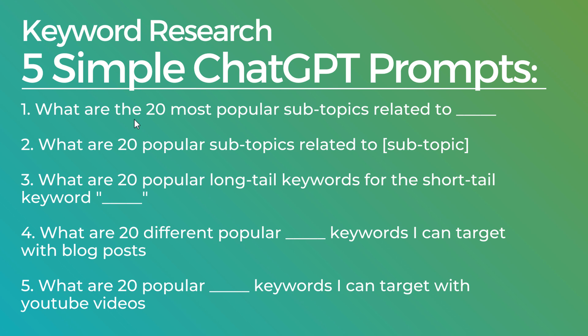The very first thing you need to do is come up with some of the most popular subtopics related to your niche. You'll see blanks in the prompt — this is where you need to enter whatever your niche is, whatever the main topic you're covering. You'll also see subtopic in brackets, so when we do our first search and come up with different subtopics, you can break those down even further to come up with more keywords.